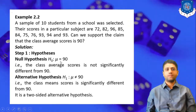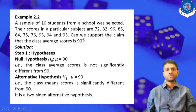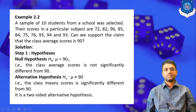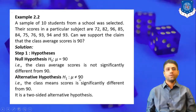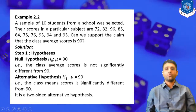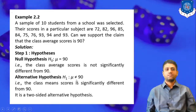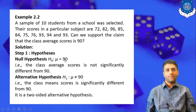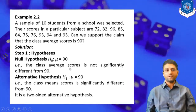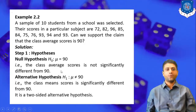Against this null hypothesis, we define the alternative hypothesis H₁: μ ≠ 90. The null hypothesis tells that the average score is 90. It may be less than 90 or greater than 90, which is why we select a two-sided alternative hypothesis — because we are interested in whether it may be less than 90 or greater than 90. In both cases, it is not equal to 90, meaning the class mean score is significantly different from 90.